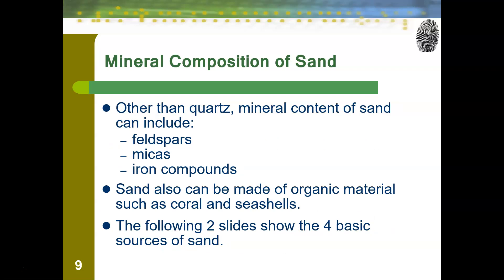Other common minerals in sand include feldspars, which often give it a slightly yellow color, and micas, which make it very sparkly — there's a lot of mica in the sand around here, which is why it can look like there's glitter in the soil. Iron compounds are also common; the soil here is a red color because the iron in the soil has rusted. In other parts of the country without iron, the soil is not red like ours. Sand can also be made of organic materials such as coral or seashells.